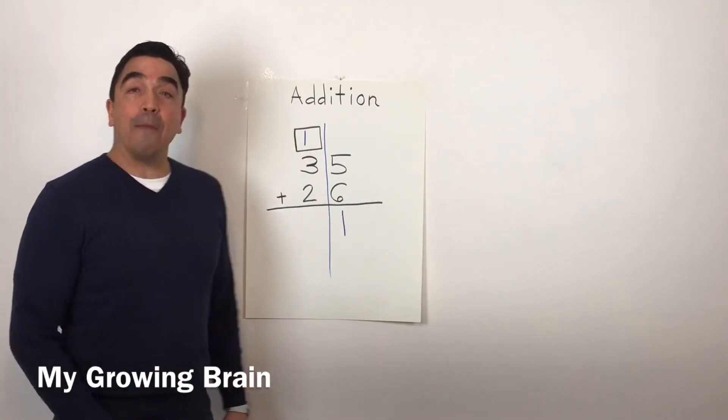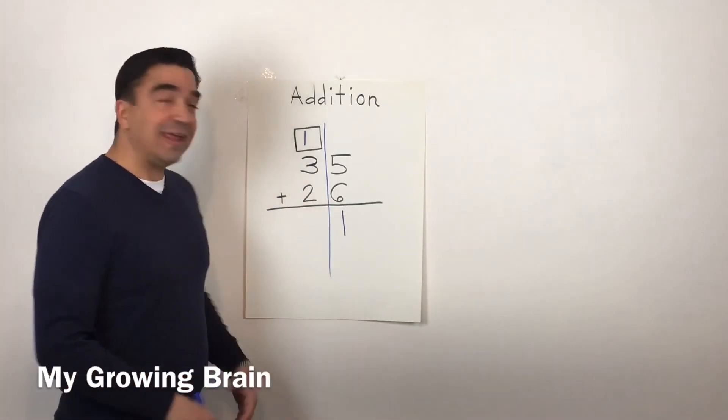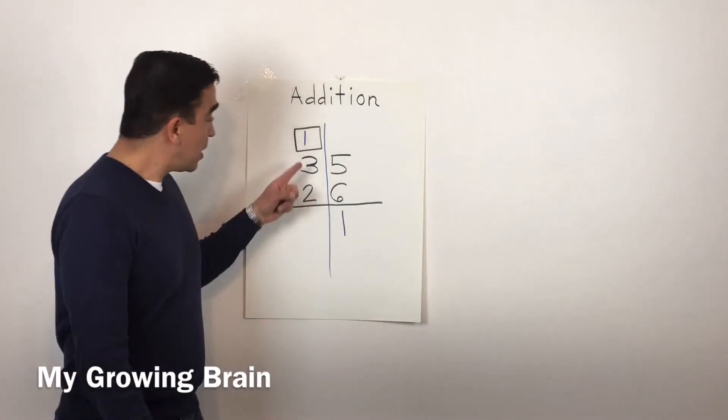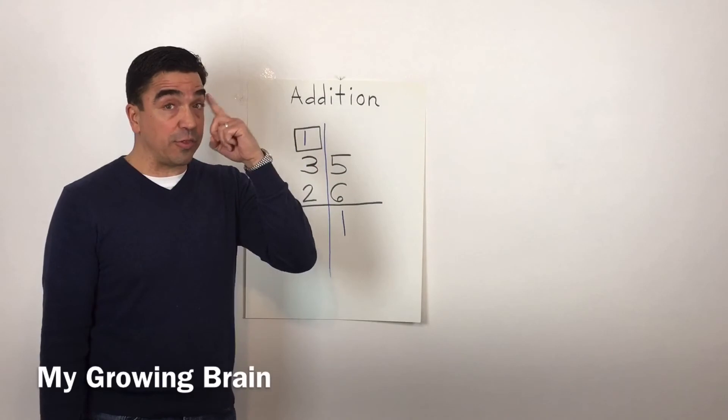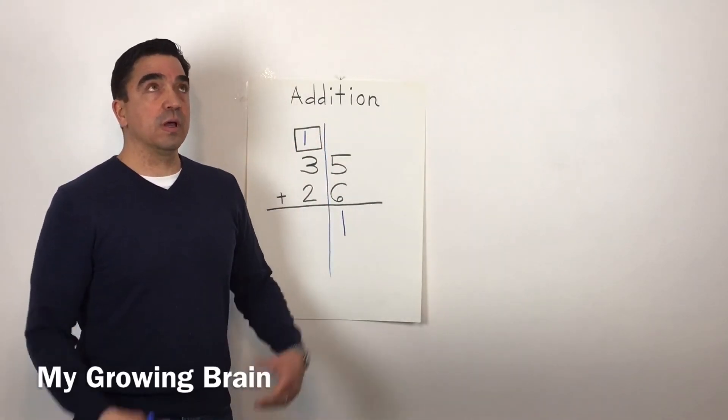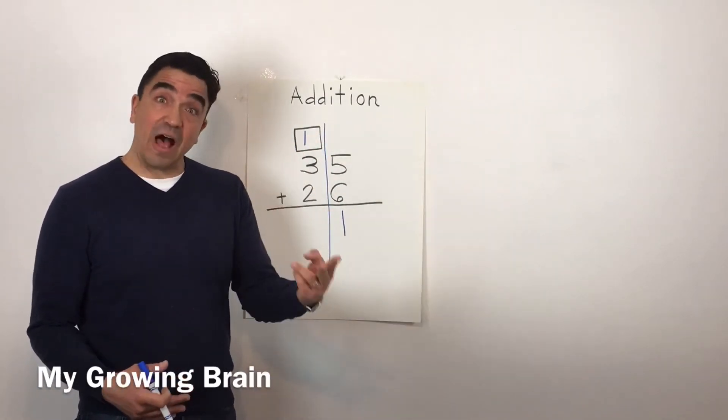Now, I'm going to add the numbers in the tens place. Three plus two. Well, once again, I'm going to put the three in my head and I'm going to count up two. Three, four, five.